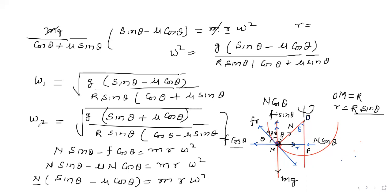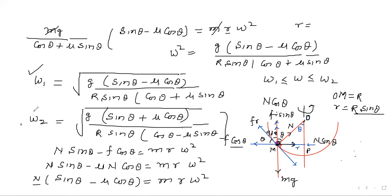So the range of angular speed for which the block will not slip is ω₁ ≤ ω ≤ ω₂, where ω₁ and ω₂ have been evaluated. Thank you.